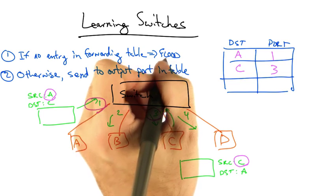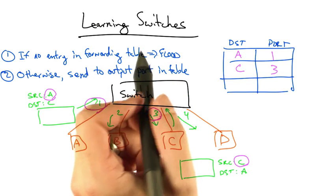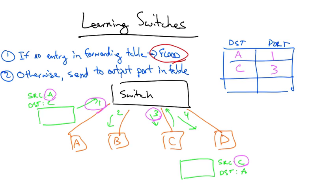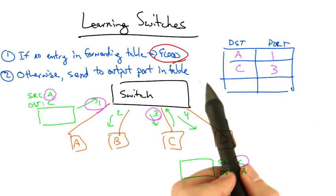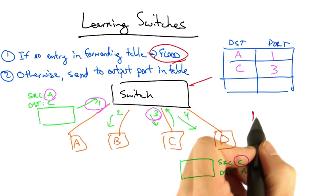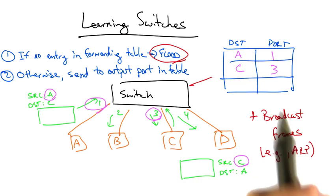Note that learning switches do not eliminate all forms of flooding. The learning switch must still flood in cases where there's no corresponding entry in the forwarding table. And also, these switches must forward broadcast frames, such as ARP queries.